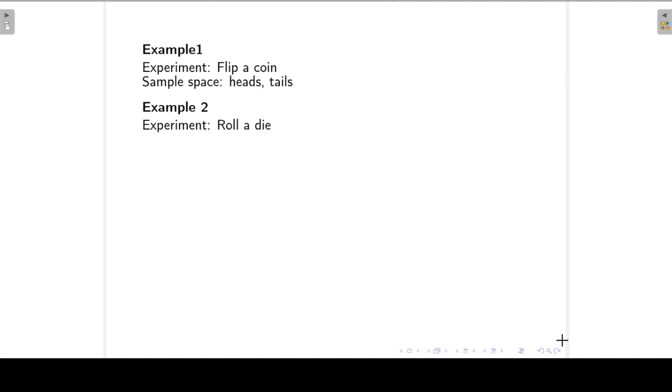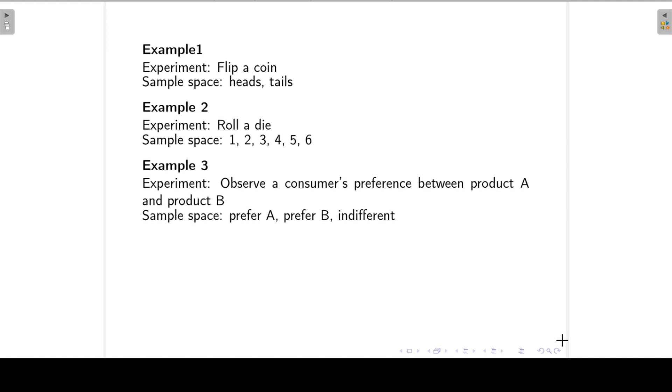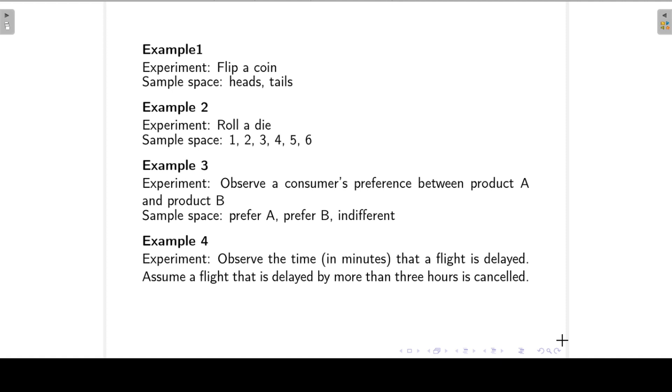Okay, the next example, when we roll a die, then the sample space will be 1, 2, 3, 4, 5 and 6. When we observe a customer's preference between product A and product B, then our sample space will be prefer A, prefer B or indifferent. If we observe the time in minutes that a flight is delayed and we assume that a flight that is delayed by more than 3 hours is cancelled, then our sample space will be the interval from 0 to 180. Now the 180 is just 3 times 60, the 3 hours times 60 minutes, so that's where we get the 180 from.